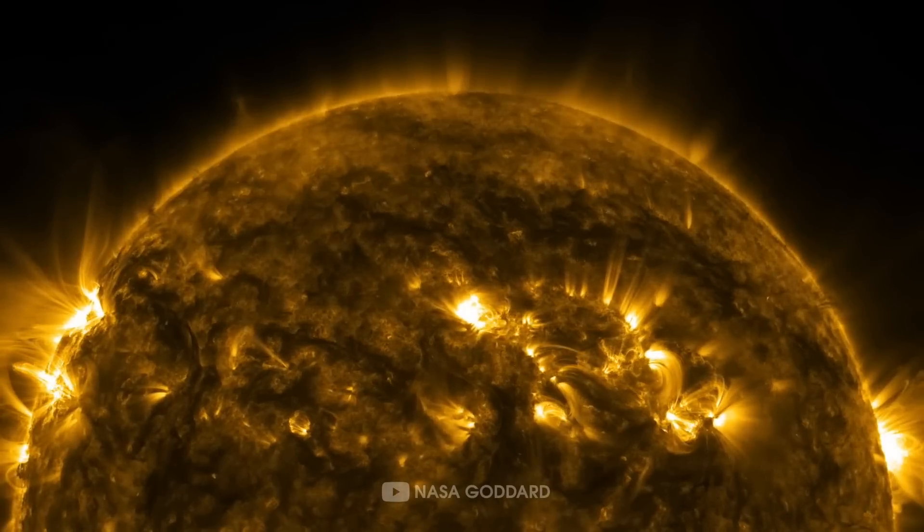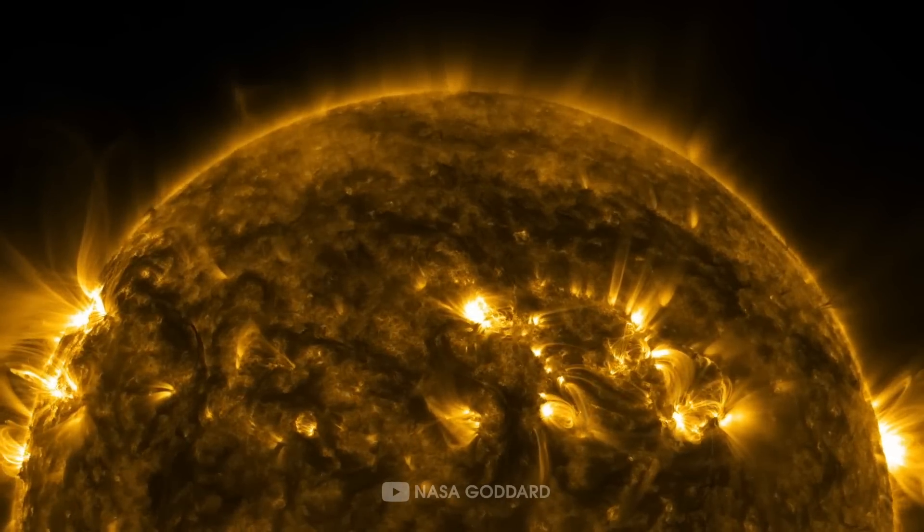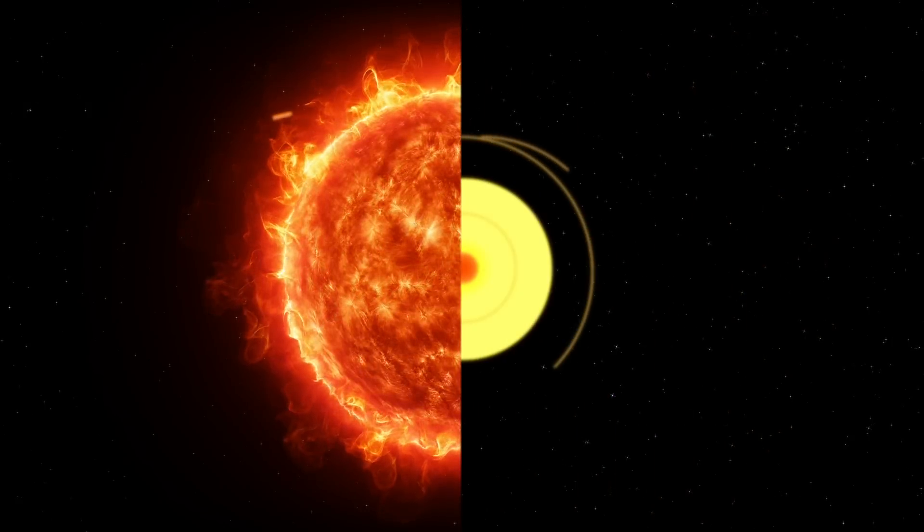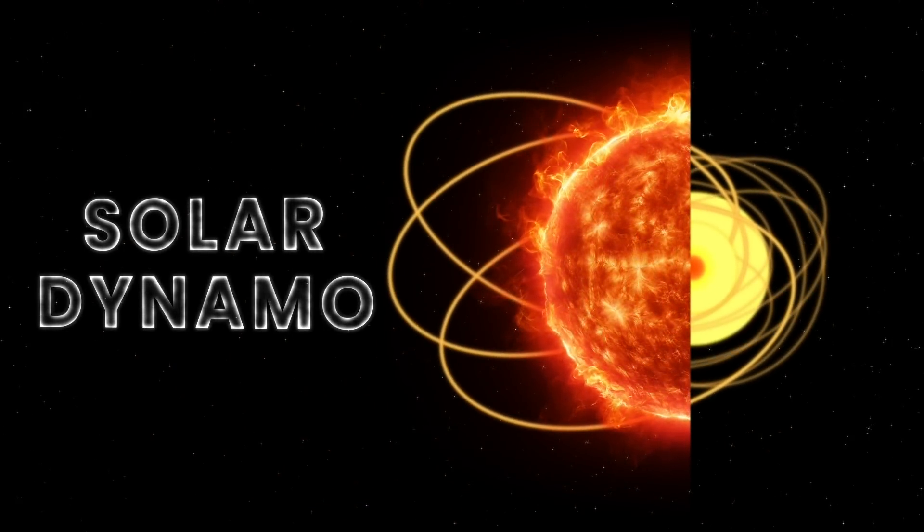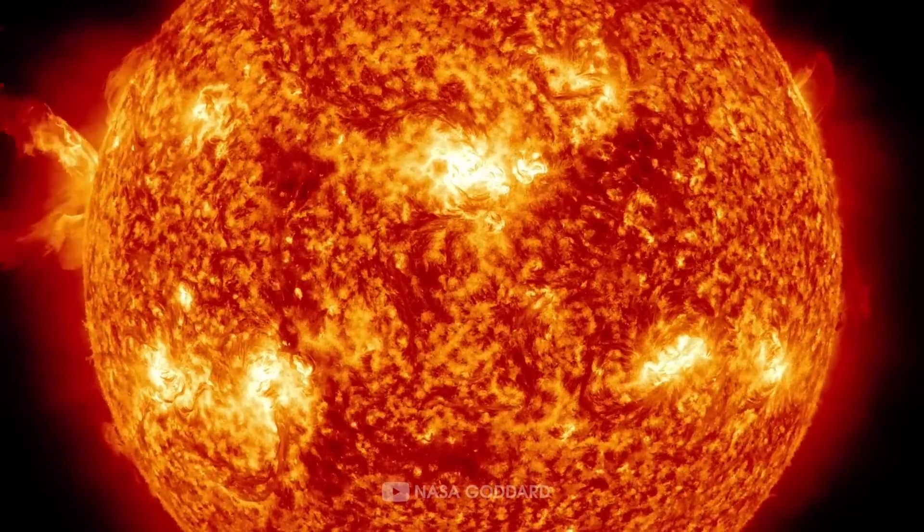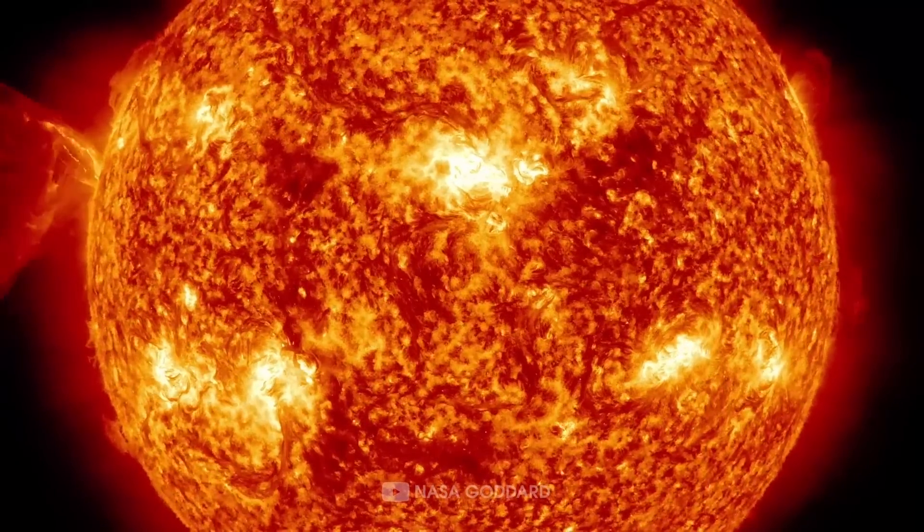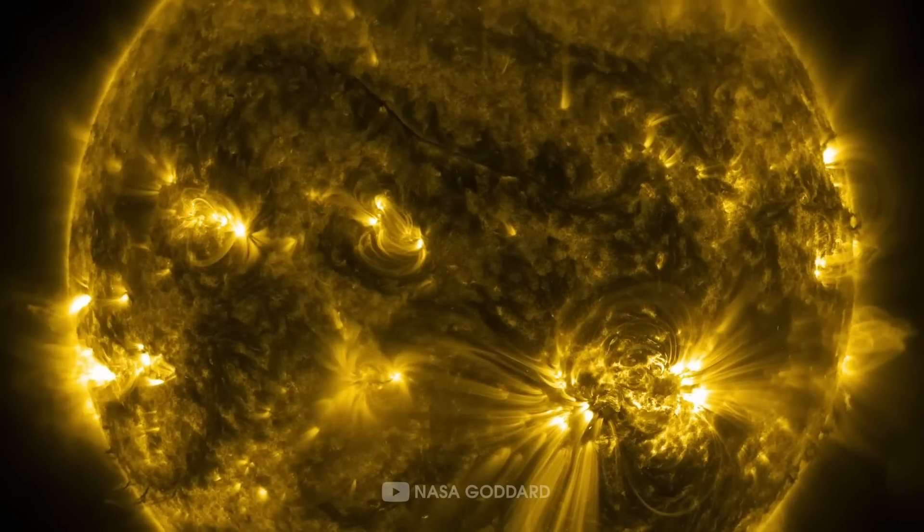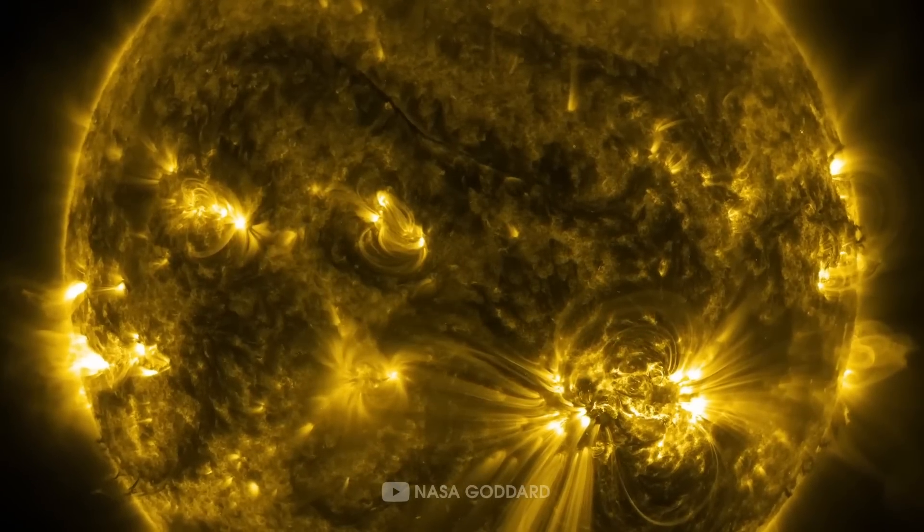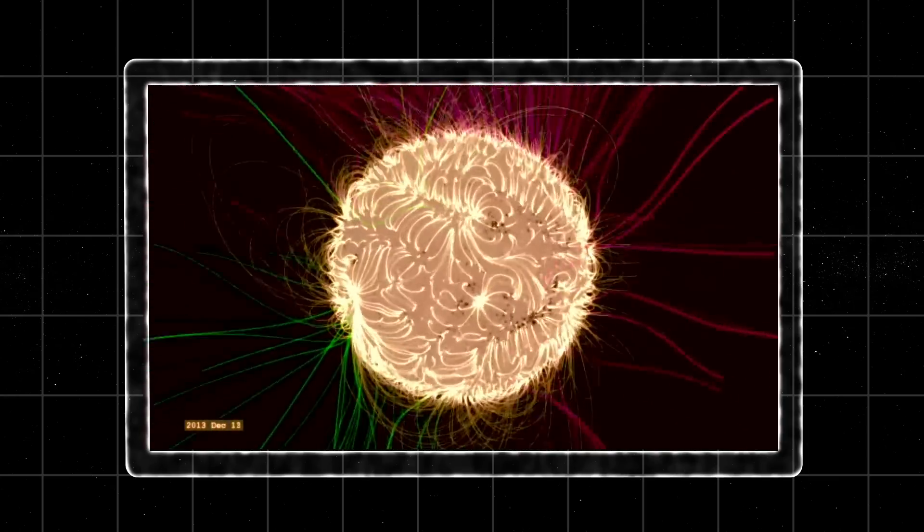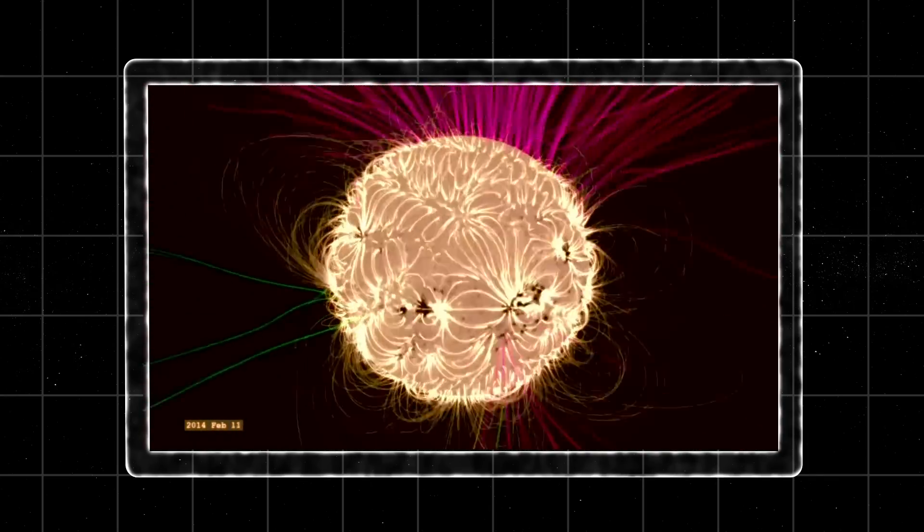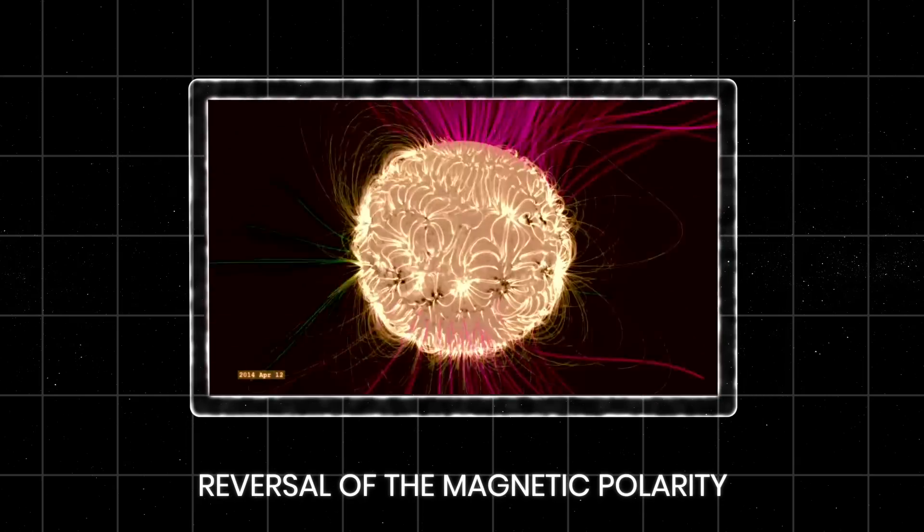The Sun's magnetic field is generated by the movement of electrically charged gases in its interior, a process known as the solar dynamo. Over time, this magnetic field becomes increasingly complex and twisted due to the Sun's rotation and convective motions. Eventually, this process leads to a complete reversal of the magnetic polarity. The North magnetic pole becomes the South magnetic pole, and vice versa.